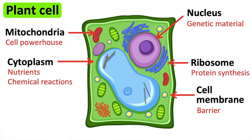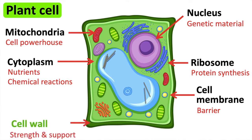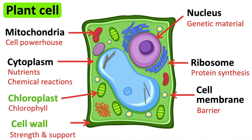However, they also contain other structures that are only found in plant cells. These include cell wall, chloroplast and vacuole. The cell walls are made from cellulose fibres.